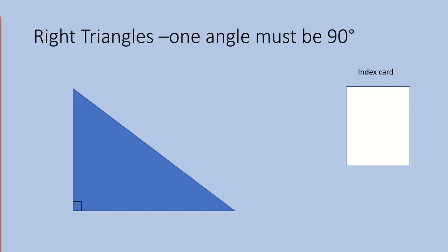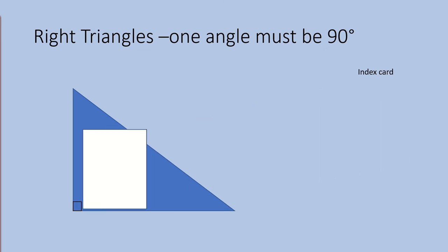Let's look at the first type of triangle. Here you will see a right triangle. A right triangle must have one angle that is exactly 90 degrees. I am going to use the index card to help me identify an angle that is 90 degrees. I can do this by placing the index card in each of the three angles in the triangle. If one corner of the index card fits perfectly in one of the angles, then you have a right triangle.